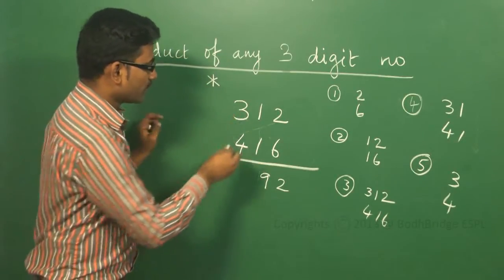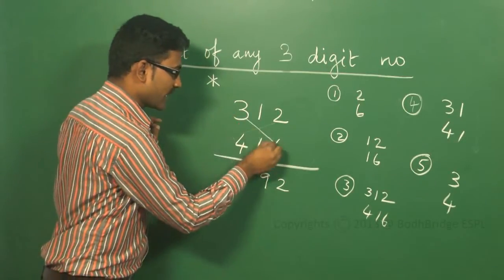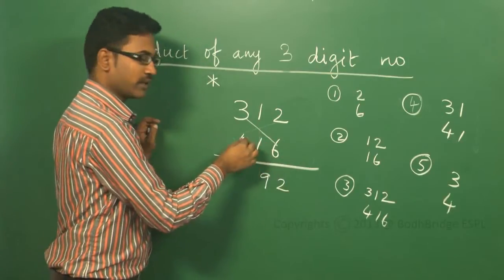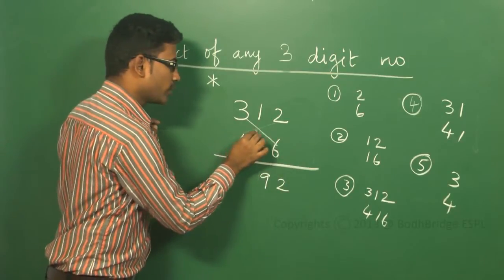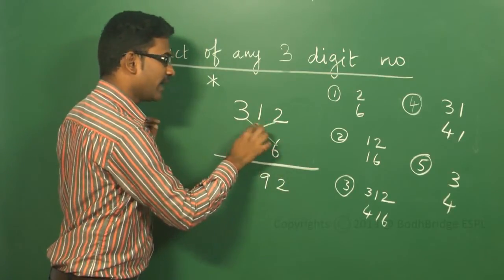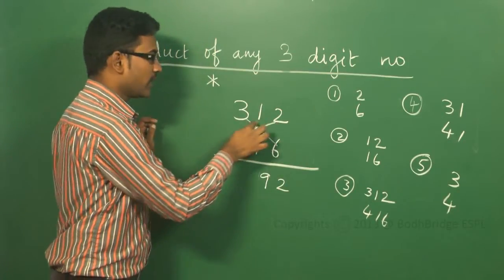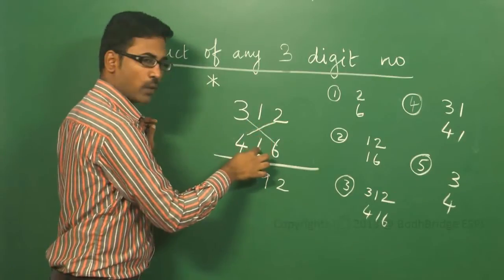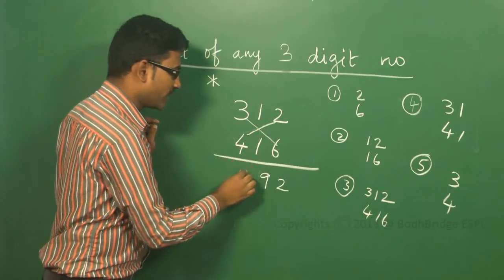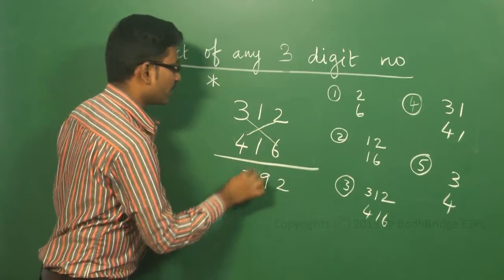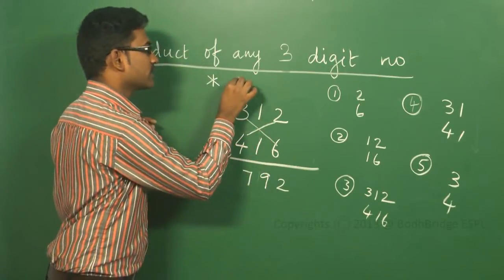The third step: 3 into 6 is 18, and 4 into 2 is 8. 18 plus 8 is 26, plus carry 1 gives 27. Now carry is 2.